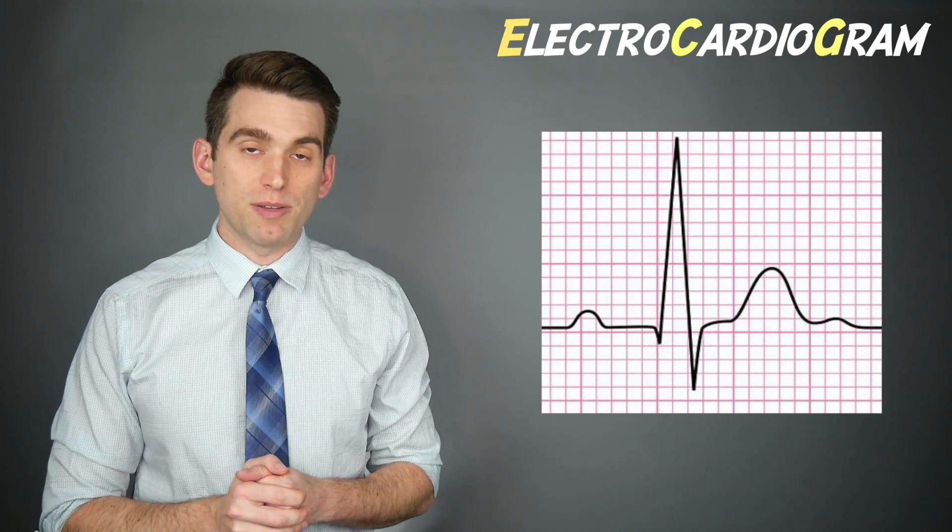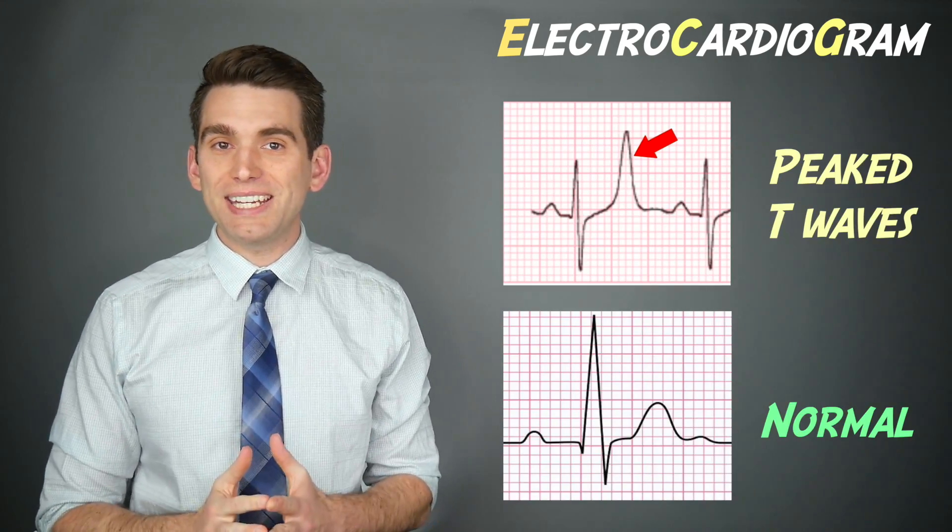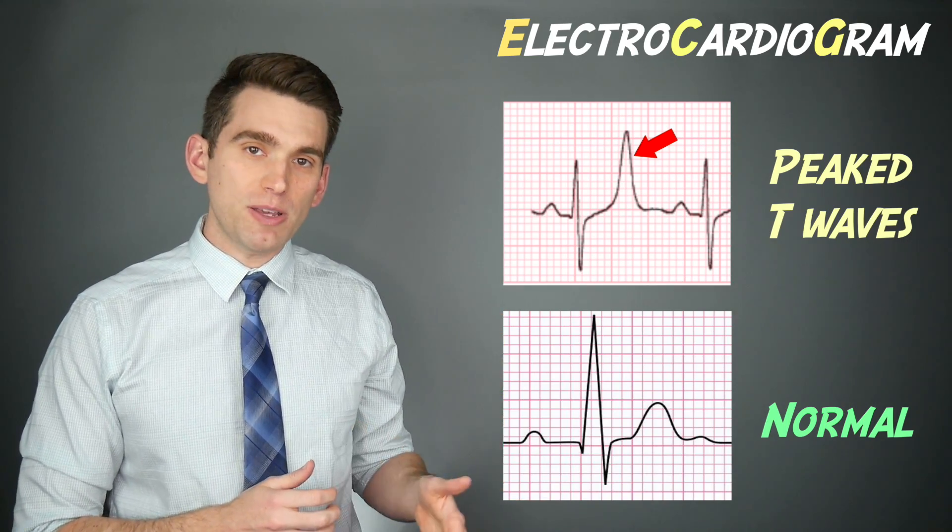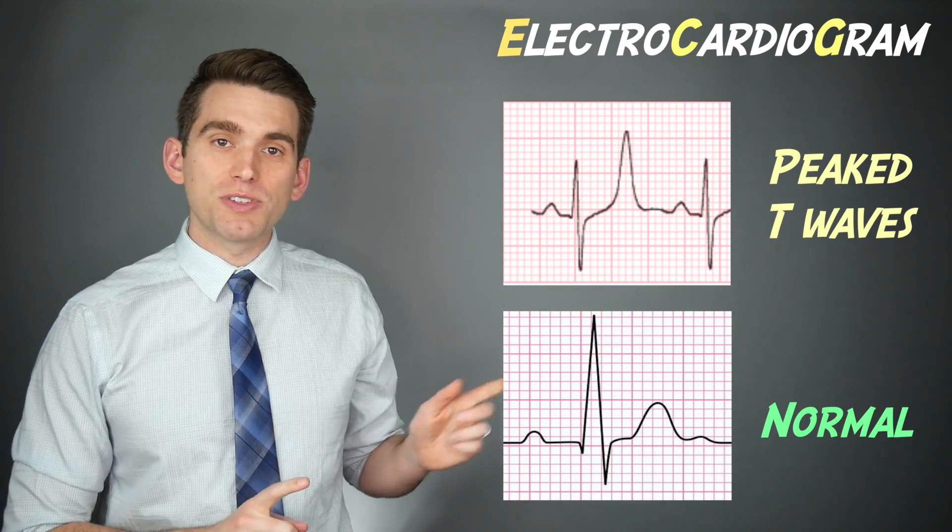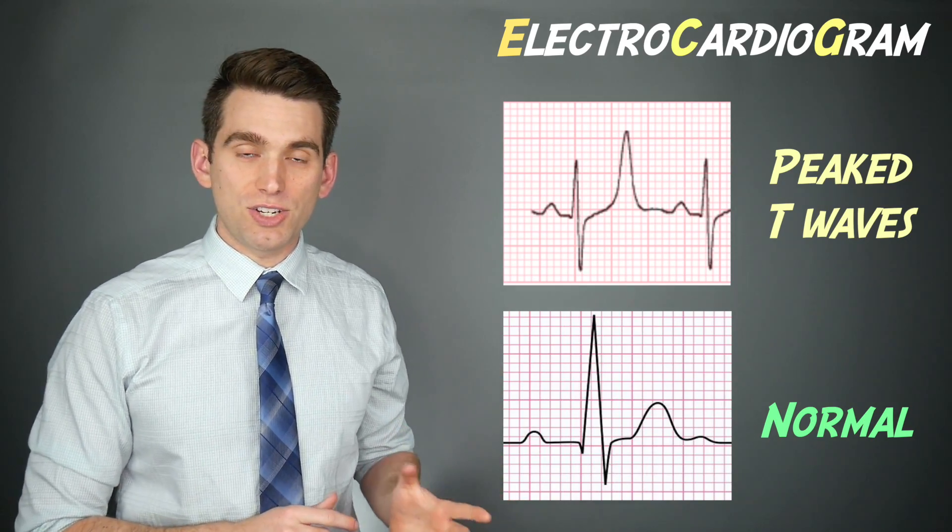Whenever we have high levels of potassium in the blood, this ECG signal gets altered in a pretty distinctive way. The first thing we see are what we call peaked T waves where these nice kind of flat T waves become very peaked and very sharp. While certainly in the hospital we'll also check blood levels, this can be a sign that someone has high levels of potassium based simply on looking at the ECG.